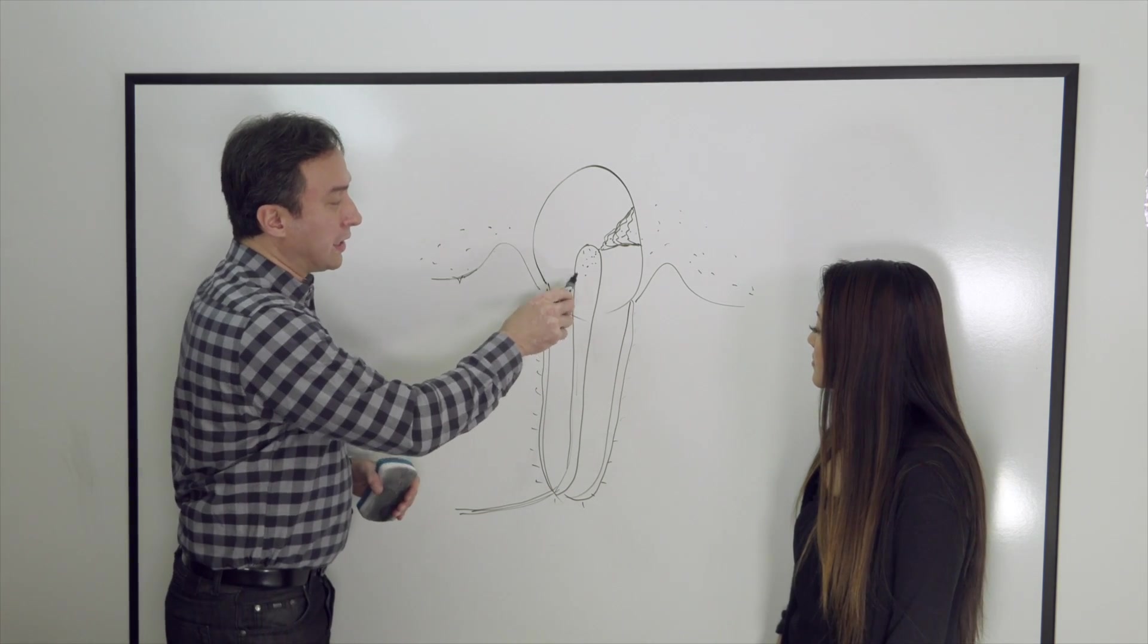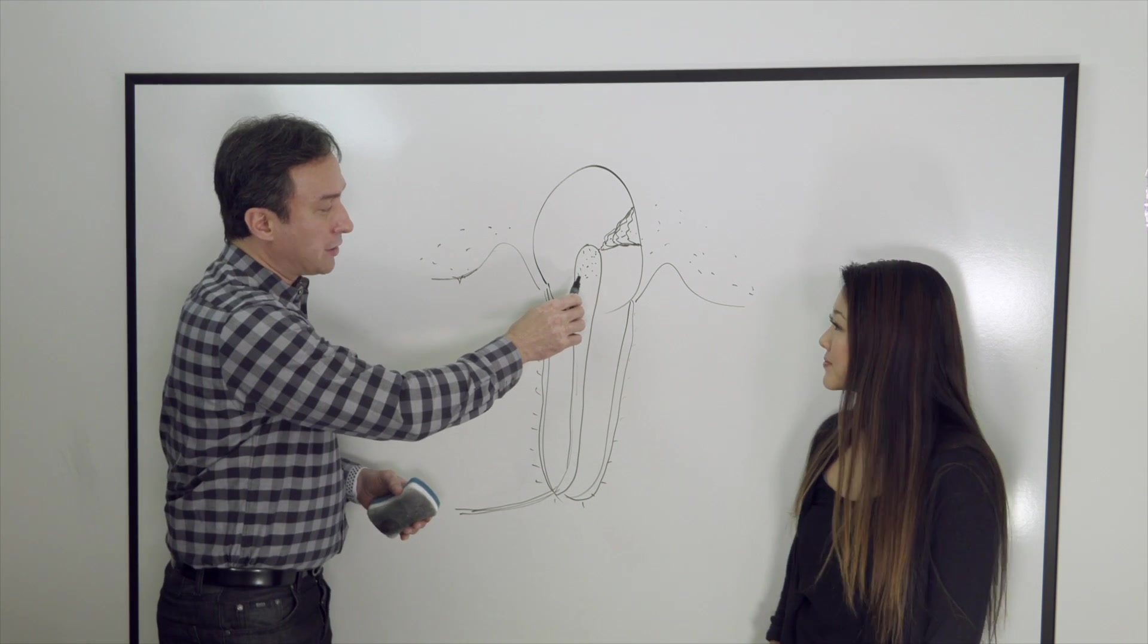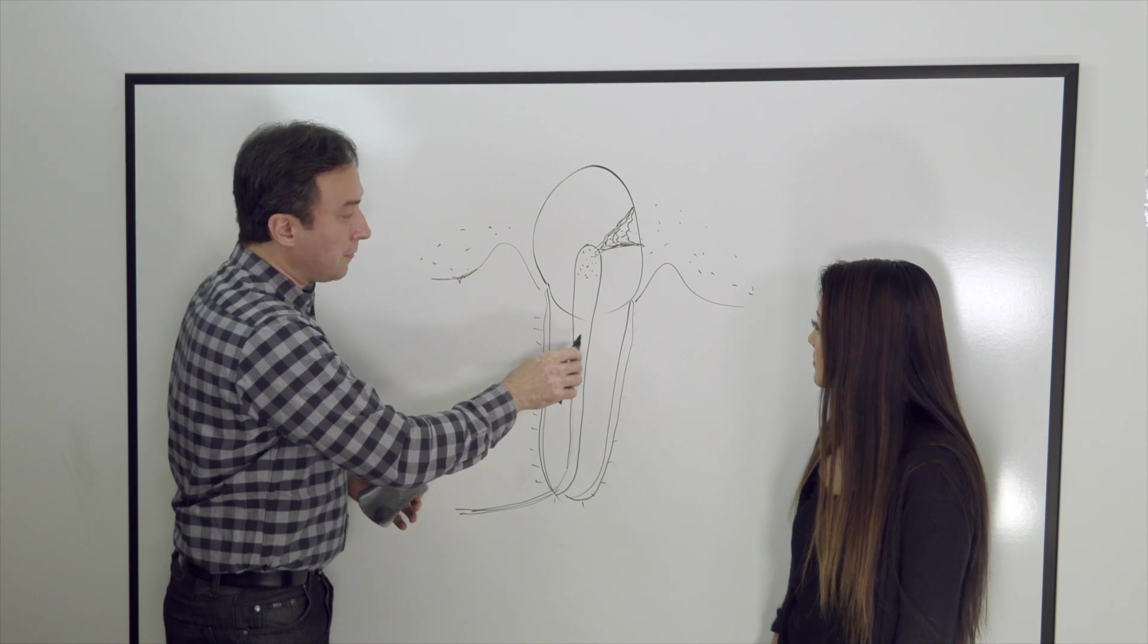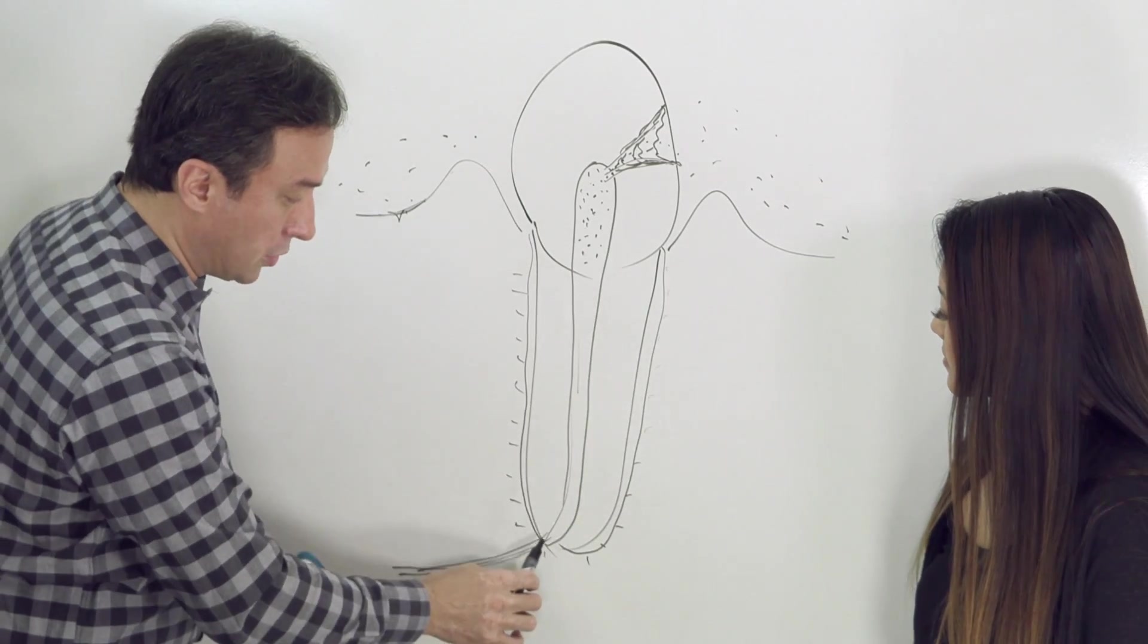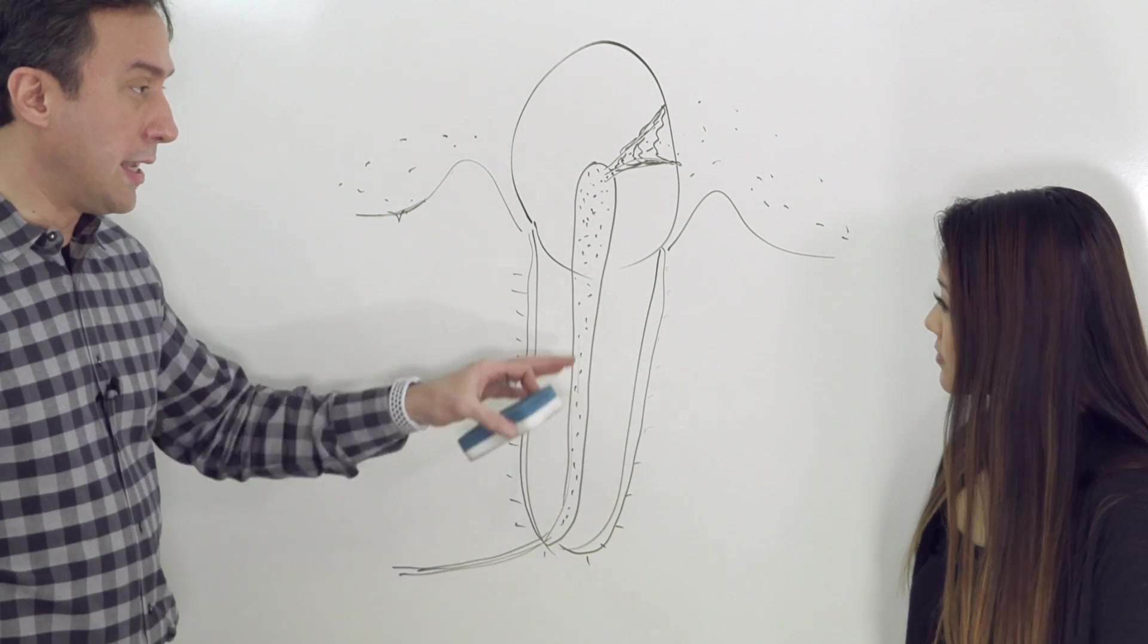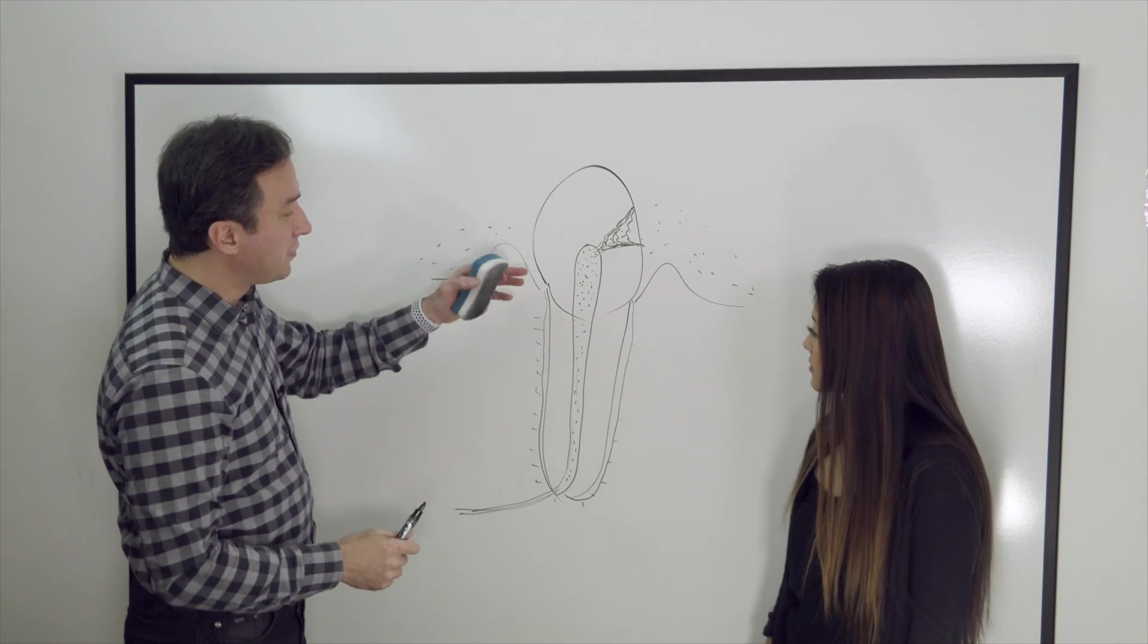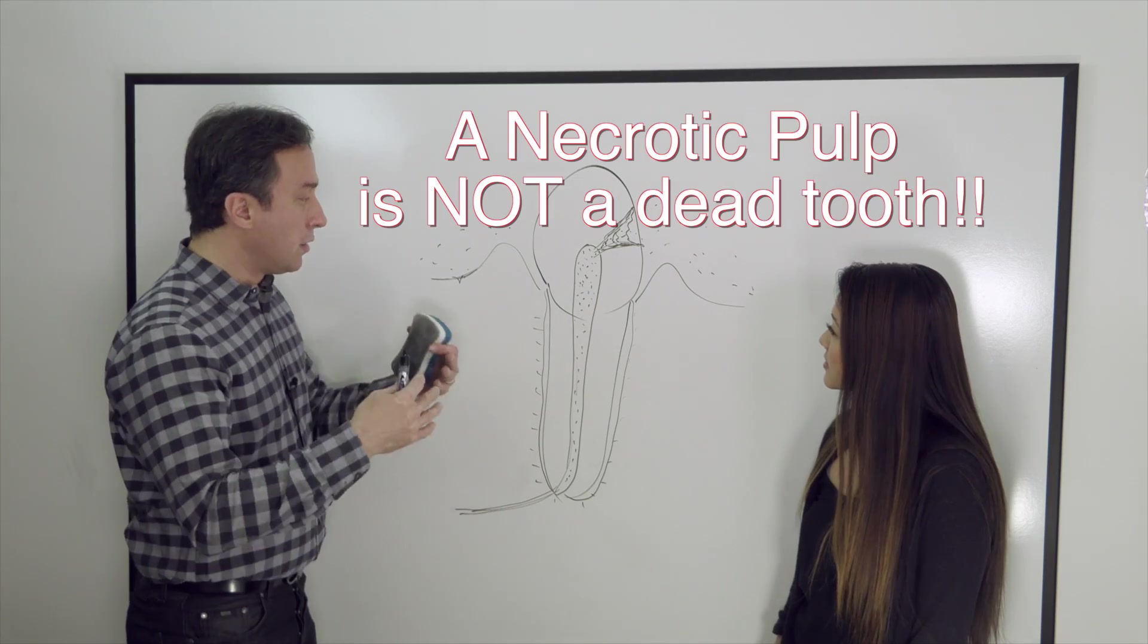So what ends up happening is the body tries to bring in white blood cells to kill off this bacteria, and it ends up, because there is a constant source being supplied from the top in terms of the decay, the body ends up losing that battle and bacteria overwhelms this tissue inside here. And you get what's called necrosis, which is the death of the pulp tissue, which is the tissue that's inside here. At that point, you have bacteria living inside the space that acts as a nest. That's why when you have a tooth that has had a necrosis of the pulp tissue, you have this what was colloquially called as a dead tooth, right?